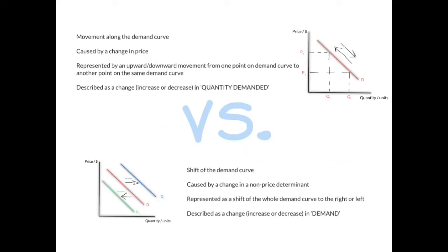In the IB Economics syllabus, you are required to distinguish between a movement along the demand curve and a shift of the demand curve. A movement along the demand curve is caused by a change in price, while a shift of the demand curve is caused by a change in a non-price determinant. A movement is represented by an upward or downward movement from one point to another on the same demand curve, while a shift moves the whole demand curve to the right or to the left.